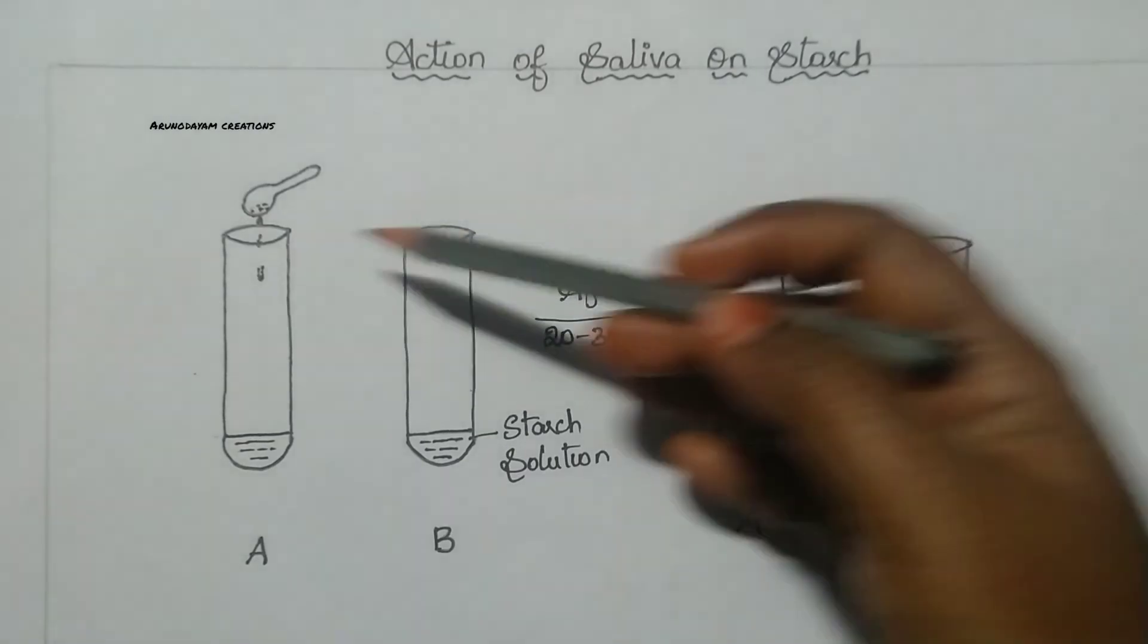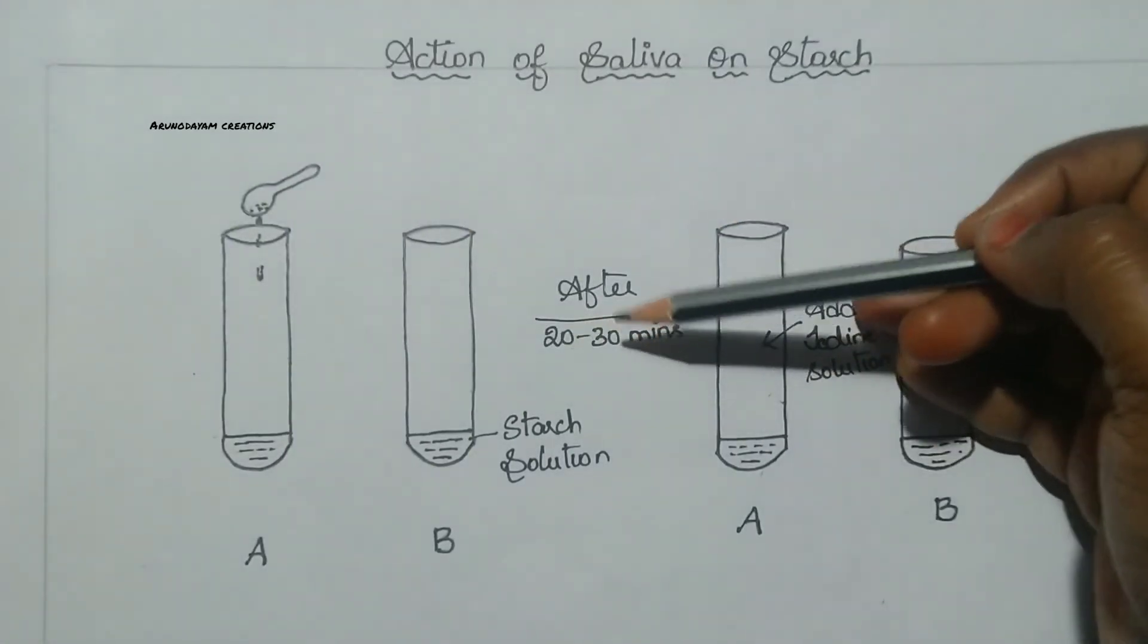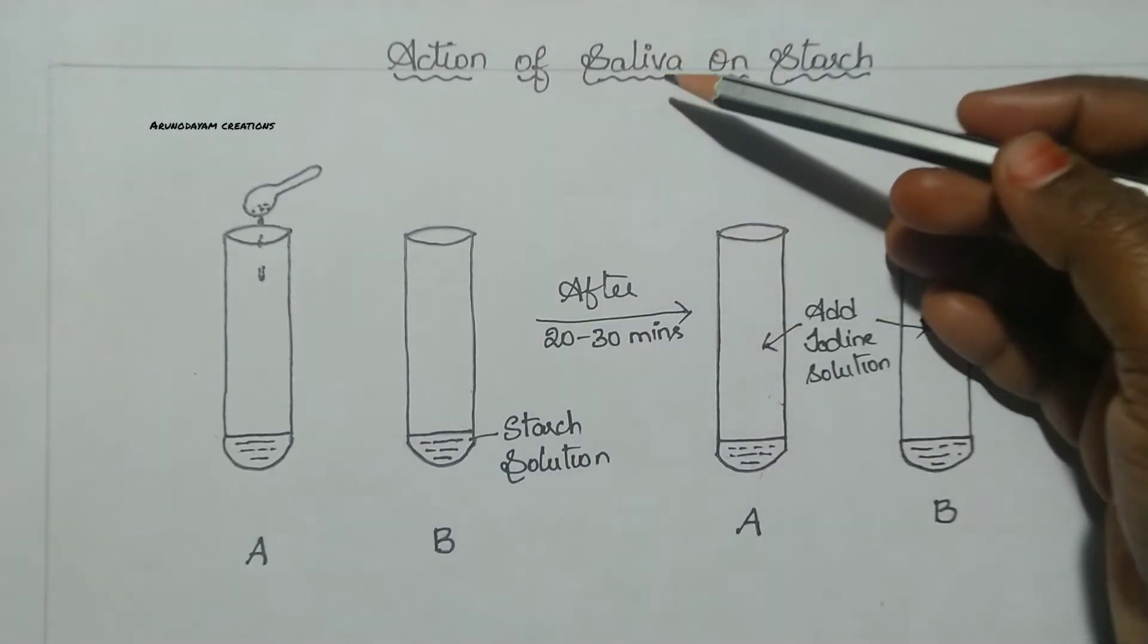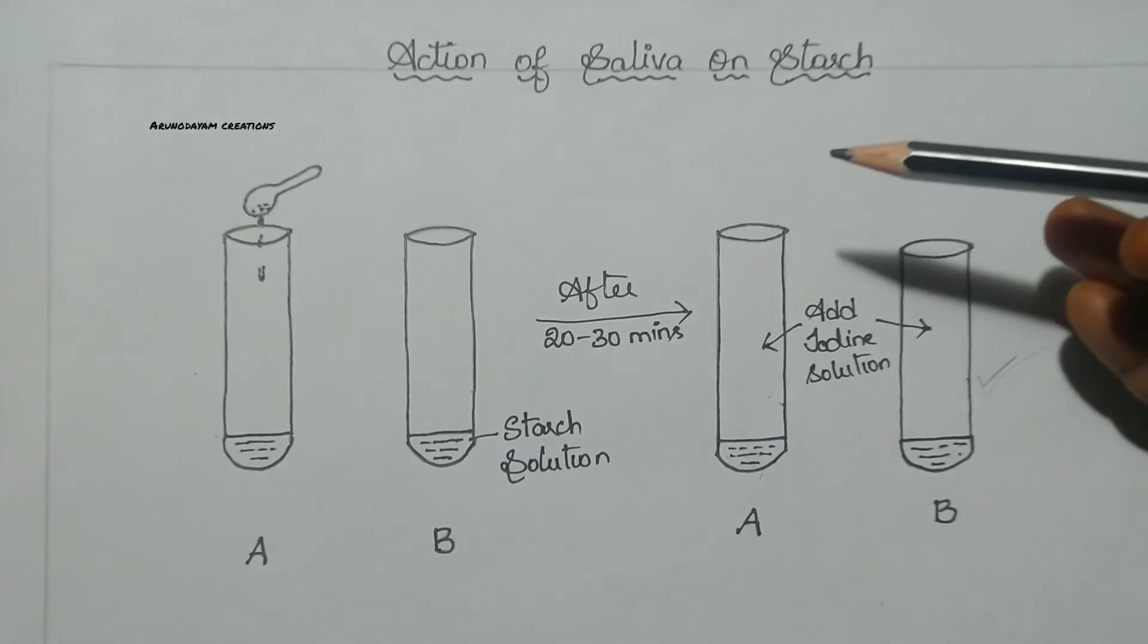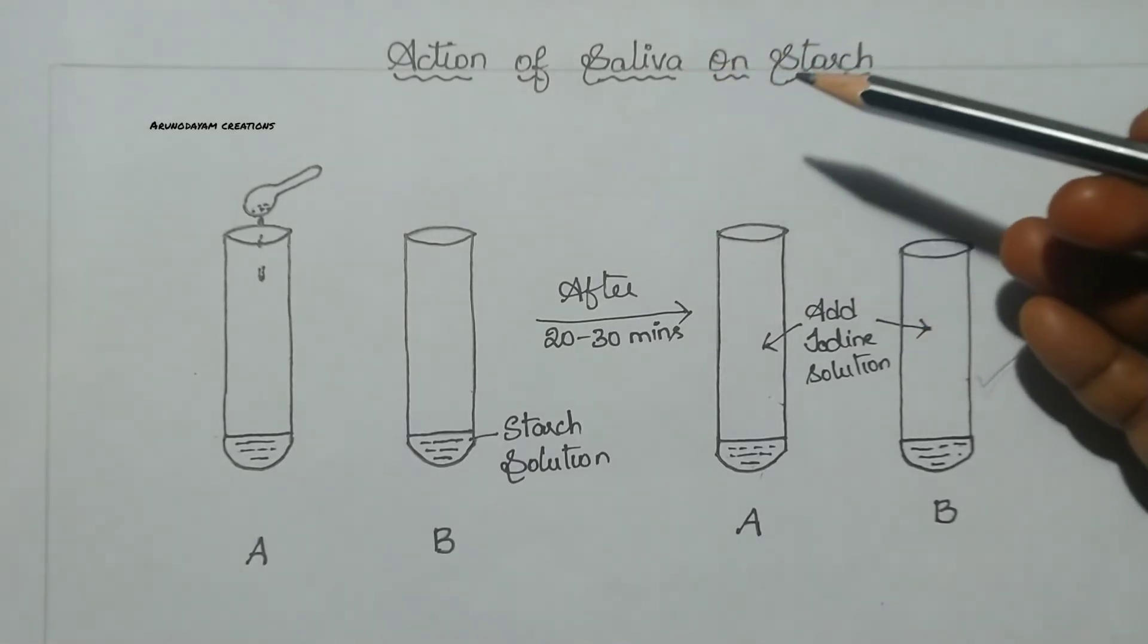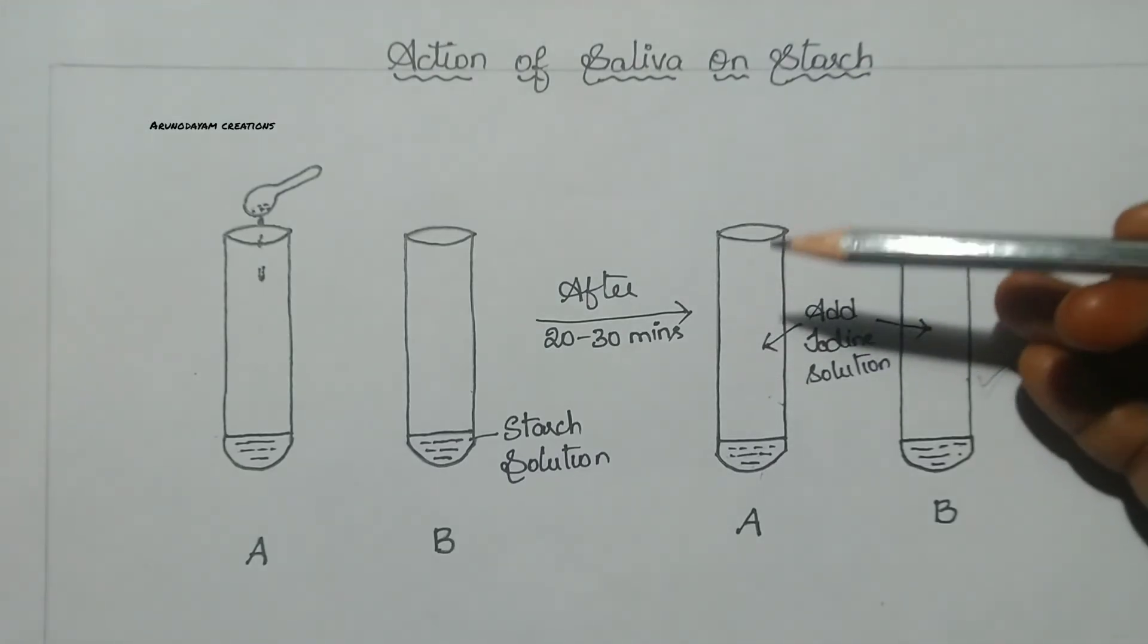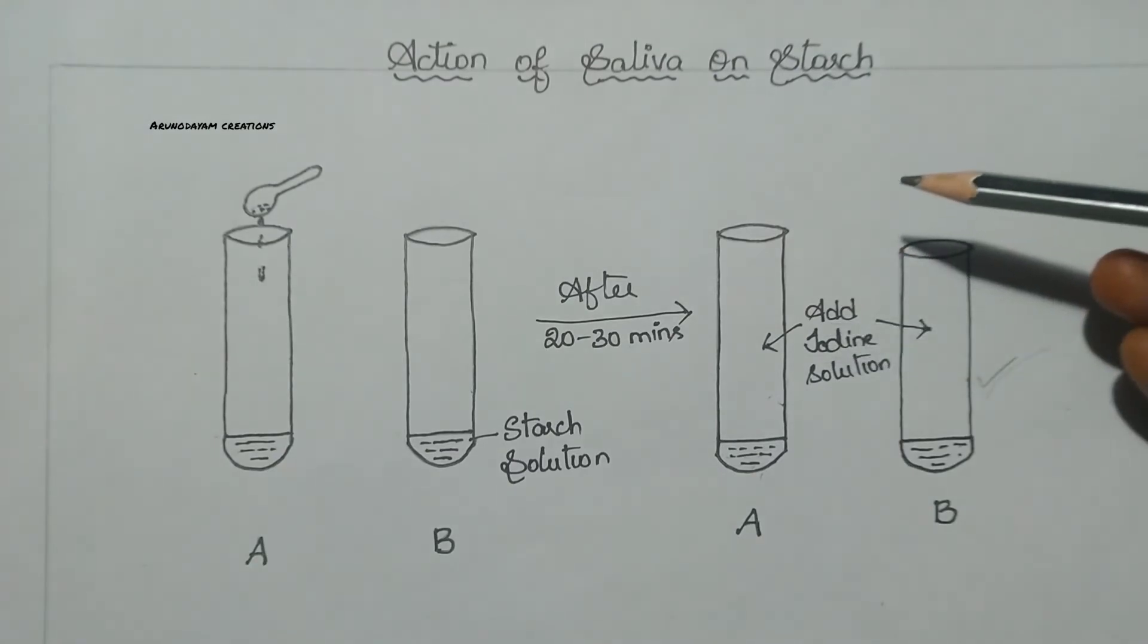Why? Because we added saliva to test tube A. So within 20 to 30 minutes, the saliva will act on this starch solution. In other words, we can say that saliva contains an enzyme called salivary amylase or ptyalin, which will help in the digestion of carbohydrates, which will help in the breakdown of carbohydrates into simpler ones. So here carbohydrates are digested into simpler ones. So carbohydrates are absent here, no more present in complex form.